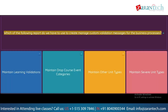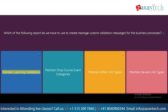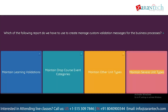Question: Which of the following reports do we have to use to create and manage custom validation messages for the business processes? Option 1: Maintain Learning Validations. Option 2: Maintain Drop Course Event Categories. Option 3: Maintain Other Unit Types. Option 4: Maintain Severe Unit Types.